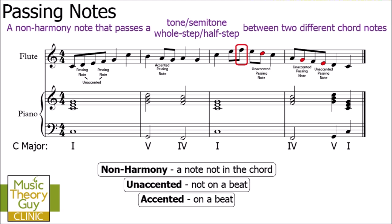One particular note is not a passing note. Although it is a non-harmony note that passes a tone or semitone, it doesn't pass between two different chord notes — either side of that F there are two E's. This type of note has a different set of rules and is called an auxiliary note, also known as a neighboring or neighbor note. Because there aren't two different chord notes either side, it is not a passing note.